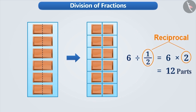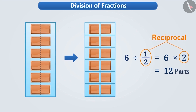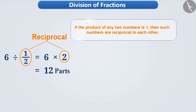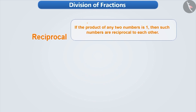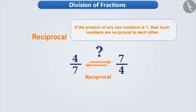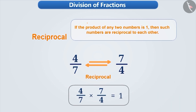Two and half are reciprocals of each other. If the product of any two numbers is one, then such numbers are called reciprocals of each other. Similarly, five and one by five are reciprocals. Can you tell whether four by seven and seven by four are reciprocals? Their product is one, so they too are reciprocals of each other.